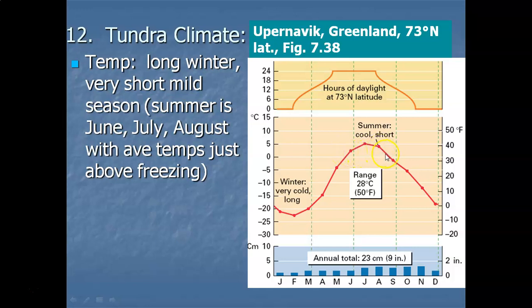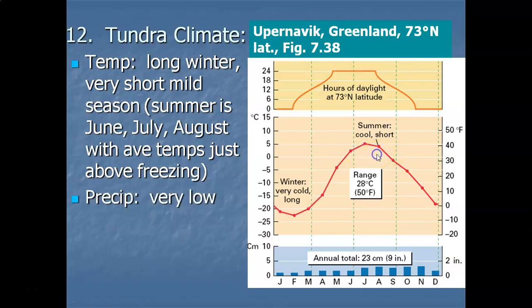And then after August, temperatures just take a nosedive. Here the average temperature in August is around freezing, and then it gets very, very frigid for the rest of the year. So it's basically winter all year long, except for those three months of quote-unquote summer.